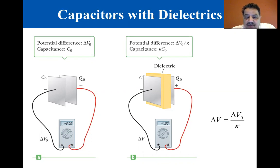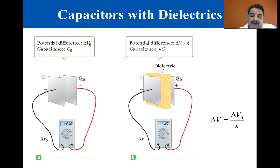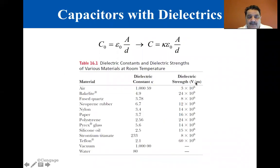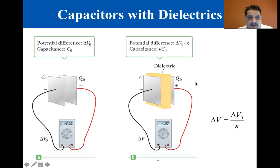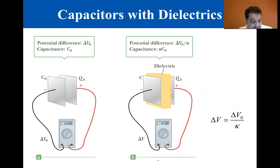Because the charge Q sub-zero on the capacitor doesn't change, we can conclude that the capacitance in the presence of the dielectric must change. The capacitance is then given by this relationship, where delta V equals delta V sub-zero divided by kappa.